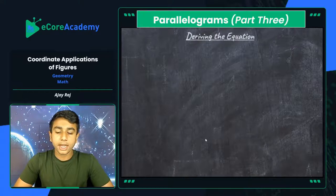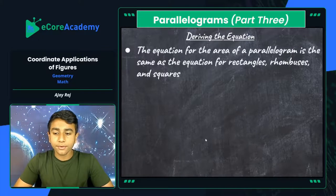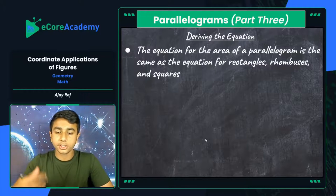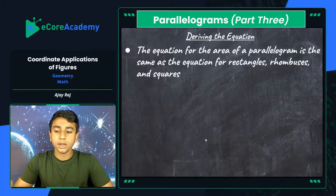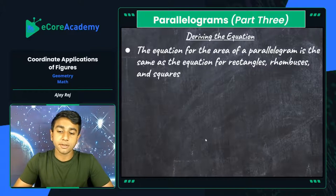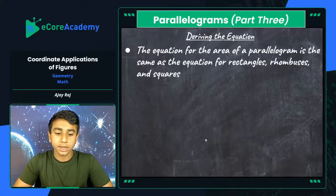Now let's look at how we derive the equation. The area formula for a parallelogram is the same as for rectangles, rhombuses, and squares because they're all special types of parallelograms. They have the same type of formula, just different terminologies — aside from length and width, you have base and height. A rhombus is a specific type of parallelogram — it's basically a parallelogram with four equivalent sides — so it's still base times height.